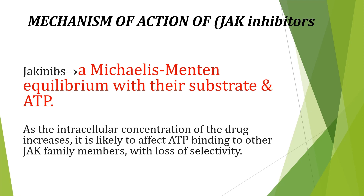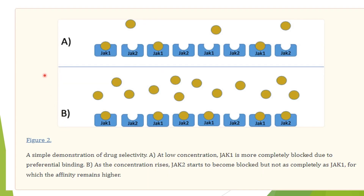Small molecule enzyme inhibitors such as JAK inhibitors follow a different rule, named Michaelis-Menten equilibrium with their substrate and ATP. For example, a JAK1 inhibitor at low concentration will compete mainly with JAK1 at its ATP site, but when the concentration of the JAK1 inhibitor is increased, it will also compete with JAK2.